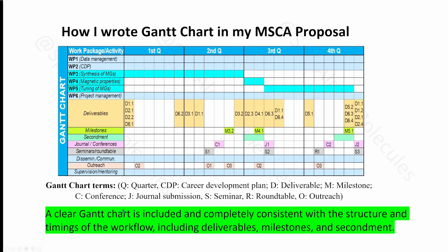If your Gantt chart is written clearly and time allocation is well managed, you can receive a positive reviewer comment such as: 'A clear Gantt chart is included, completely consistent with the structure and timings of the workflow, including deliverables, milestones, and secondments.' You can create the Gantt chart in different ways — PowerPoint, Word, or Excel. I made mine in Excel, then converted it to a PNG or JPG image and pasted it into the proposal.